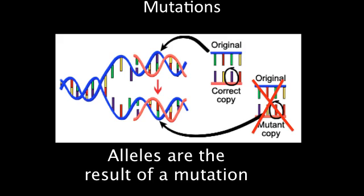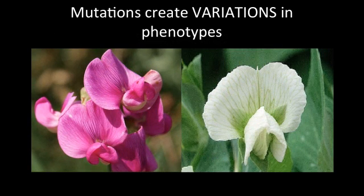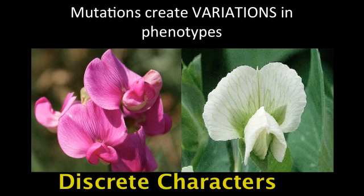Many mutations are detrimental to the organism, and so the organism dies during development and never has a chance to pass that mutation on to the next generation. But mutations are responsible for variations in phenotypes, and only a variation that is heritable can be acted upon by natural selection. These genetic variations can be determined by one set of alleles, in which case we refer to them as discrete characters.